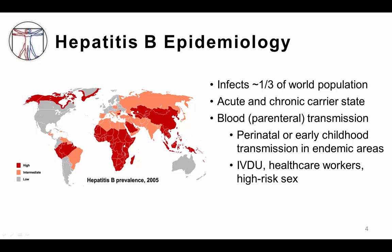Hepatitis B virus infects approximately one-third of the world's population. East Asia, Sub-Saharan Africa, Eastern Europe, the Middle East, and the Amazon have the highest hepatitis B prevalence. Unlike hepatitis A or hepatitis E virus, this virus can cause both an acute and a chronic state. It is transmitted largely through the blood, which is known as parenteral transmission. In endemic areas, many infections are acquired perinatally or in early childhood.